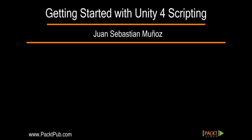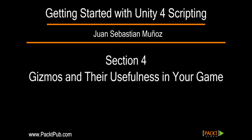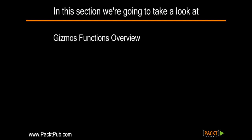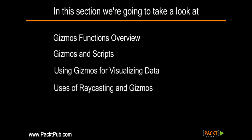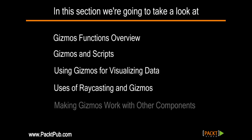Hi and welcome to Getting Started with Unity for Scripting. In this section, we are going to talk about gizmos. We'll give a brief overview of what gizmos are and what you can do with them, how to connect them with your scripts, how to visualize data from your scripts with gizmos, how to raycast and use gizmos with your mouse, and how to make gizmos communicate and show data from other components. So let's get started.